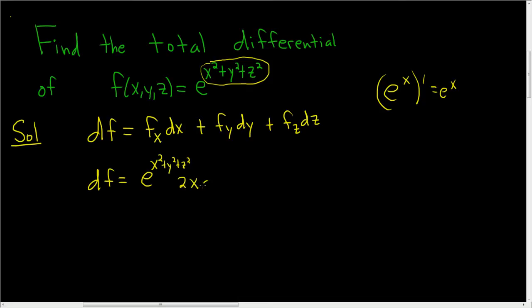And then we still have the dx, plus the partial derivative of f with respect to y. Again, we just get e to the x squared plus y squared plus z squared, times the derivative of the inside with respect to y. This time x and z are constant, so the derivative of y squared is 2y, dy.